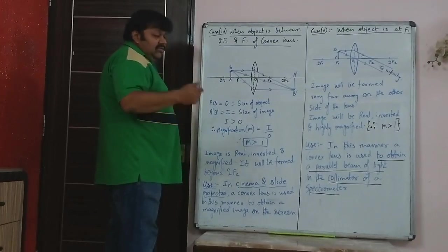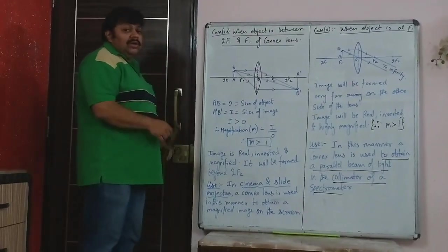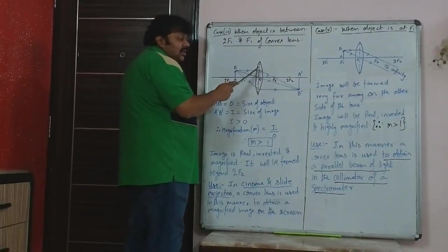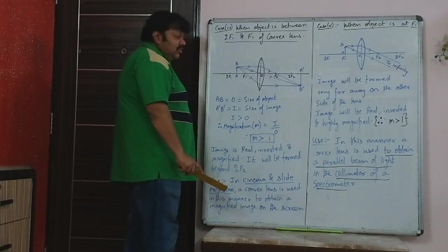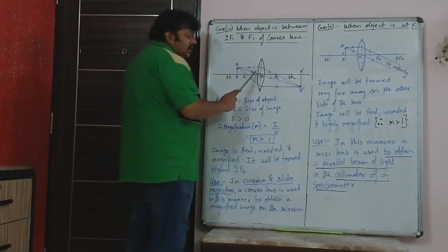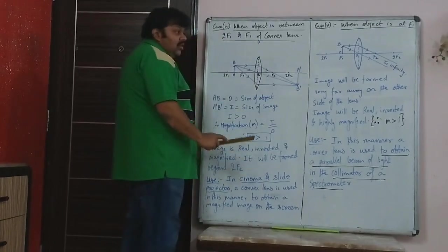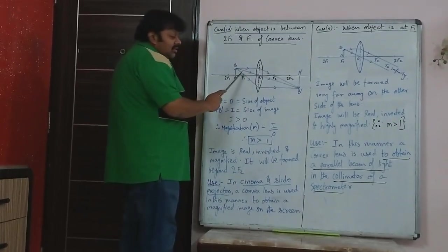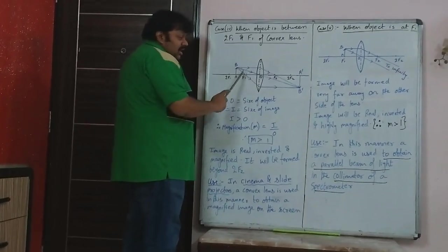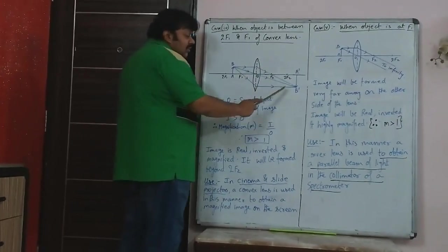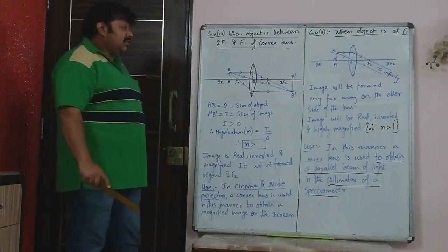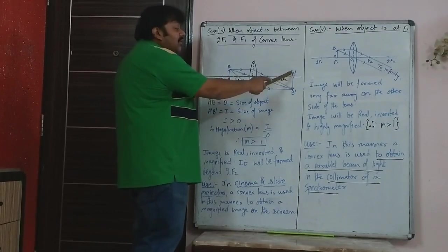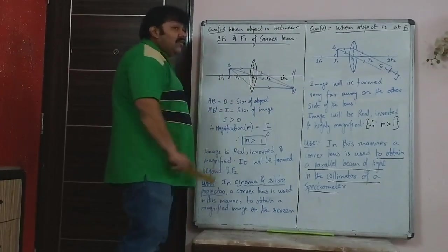We are considering all three rays while drawing ray diagrams. The first ray is parallel to the principal axis — after refraction, it passes through F2. The second ray passes through the optical center O and goes straight, undeviated. The third ray comes directed towards F1 — after refraction, it will be parallel to the principal axis. All three rays meet at point B', so A'B' is the image of object AB.